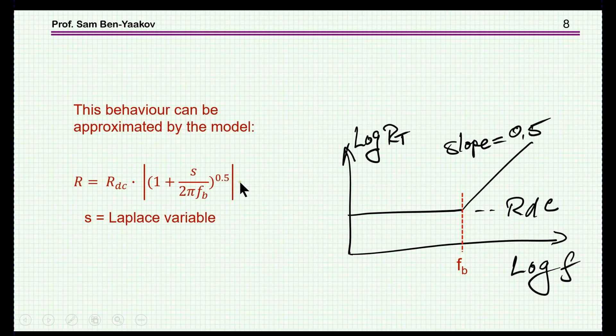To begin with, we observe that when we look at this function that I've plotted here, which has a break point here at f sub b, this is very much like a zero, a Bode plot of a zero, except that the slope is 0.5 and not 1.